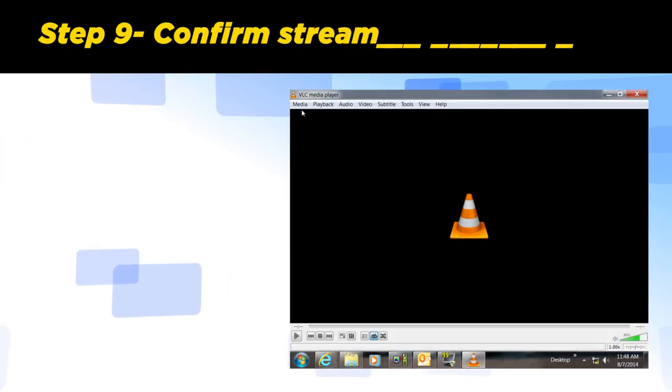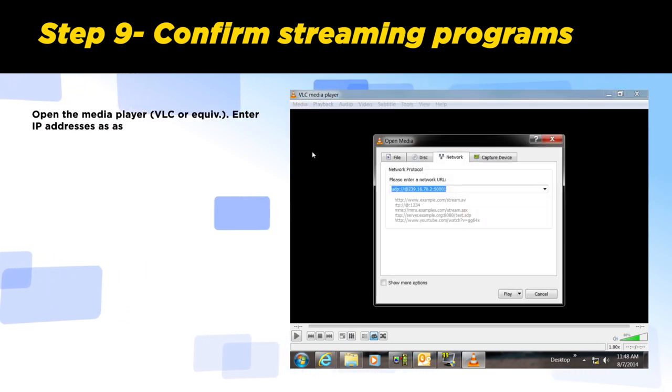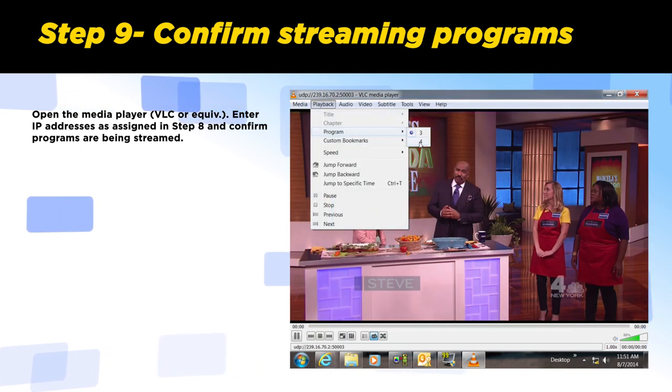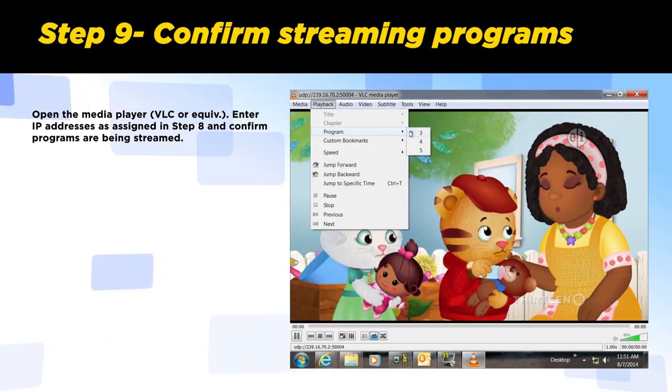Step 9: Confirm streaming programs. Open the media player VLC or equivalent. Enter the IP address assigned in step 8 and confirm the programs are being streamed. Now you are all set up. Thank you for watching.